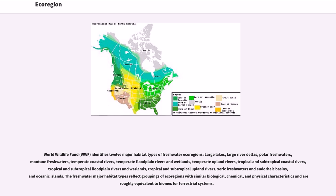The World Wildlife Fund identifies 12 major habitat types of freshwater ecoregions: large lakes, large river deltas, polar freshwaters, montane freshwaters, temperate coastal rivers, temperate floodplain rivers and wetlands, temperate upland rivers, tropical and subtropical coastal rivers, tropical and subtropical floodplain rivers and wetlands, tropical and subtropical upland rivers, xeric freshwaters and endoreic basins, and oceanic islands.